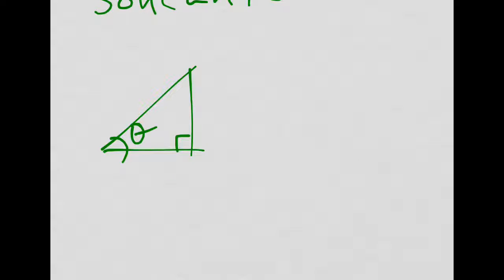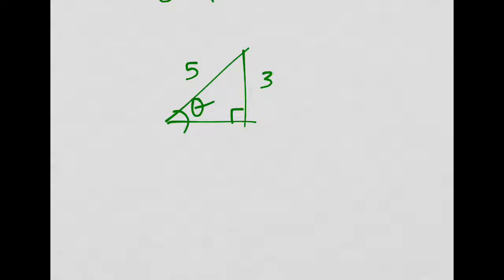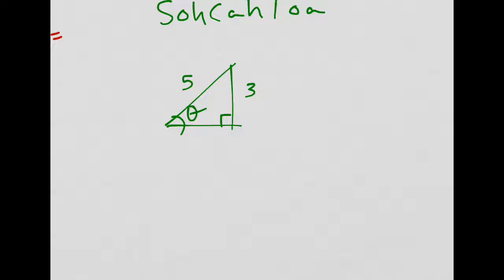I know that sine of theta is negative 3 over 5. I'm going to ignore the signs for this because when we use right triangles, we don't think about negatives - we're not having any obtuse angles. So sine is opposite, so that's 3 and 5. You can use Pythagorean theorem or just the fact that this is a 3, 4, 5 triangle.